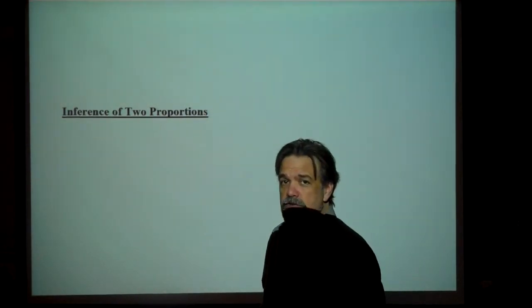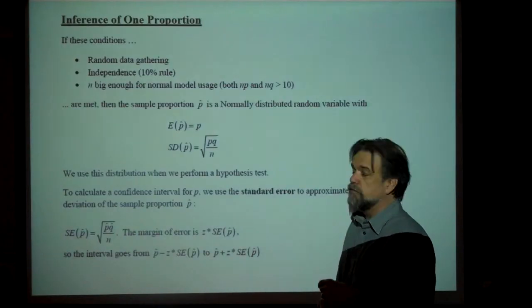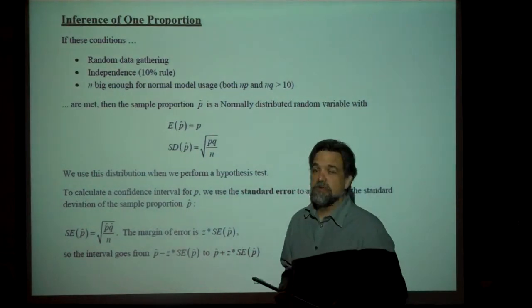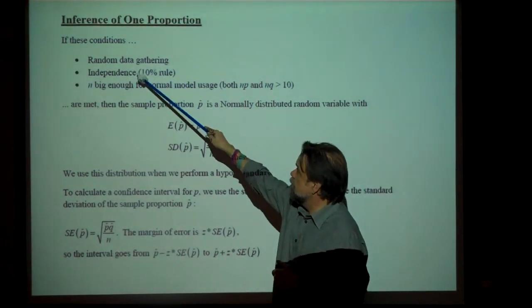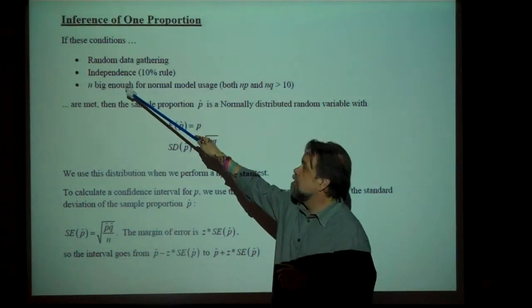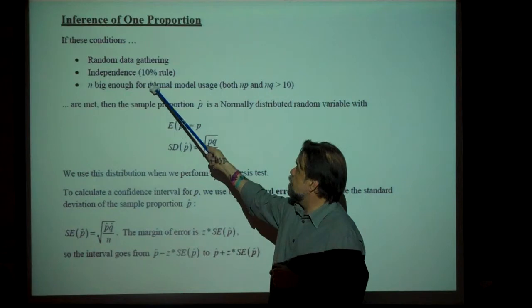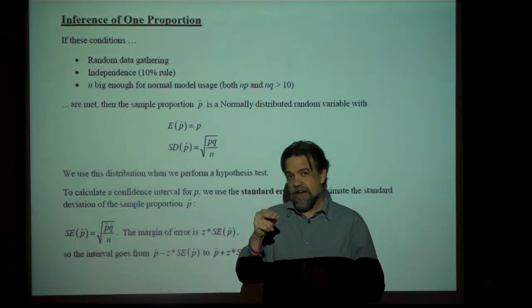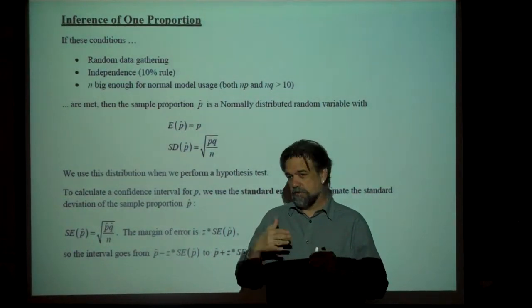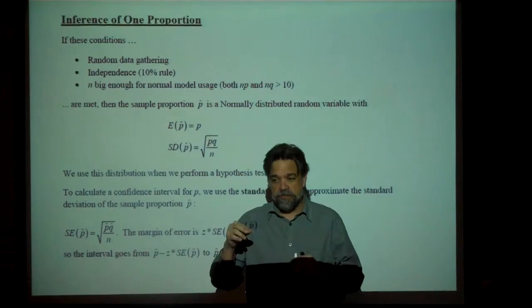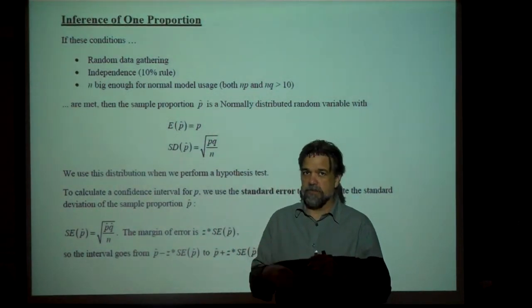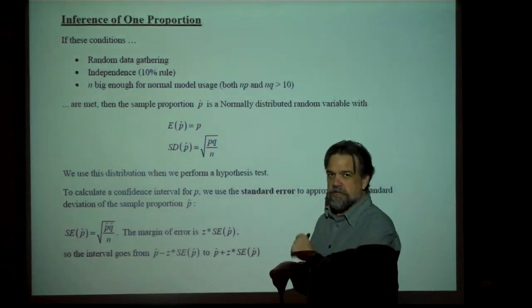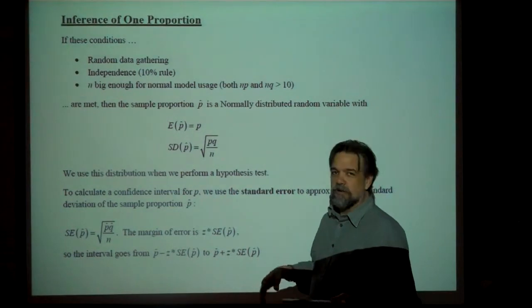In order to do this, first let's take a look at what we know about inference of one proportion. We know that we have three conditions that we always have to meet: random data gathering, independence, and is n big enough? The way that we do independence is we check the 10% rule — we make sure that our sample size is not bigger than 10% of our population. If it gets bigger than 10% of our population, then sampling without replacement becomes problematic, and we no longer have Bernoulli trials, which means our whole model kind of falls apart.